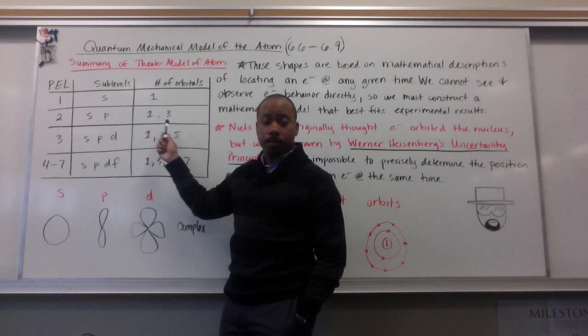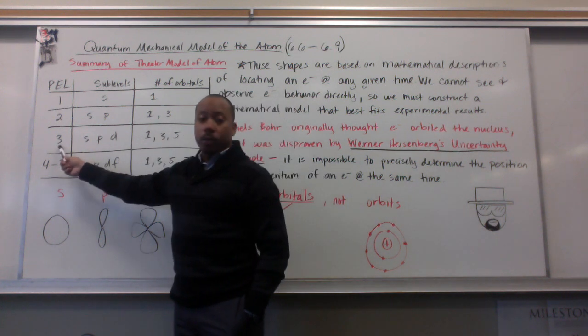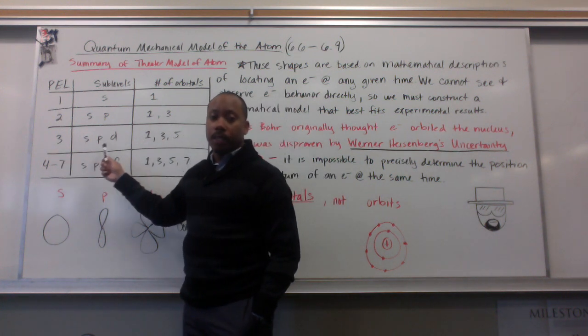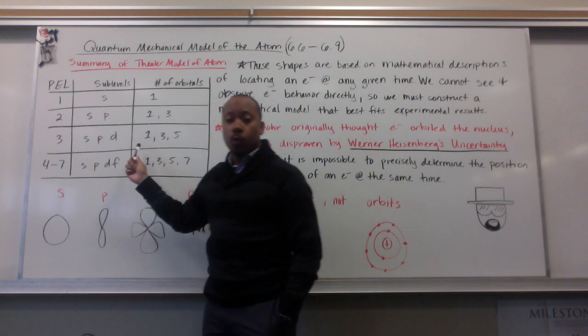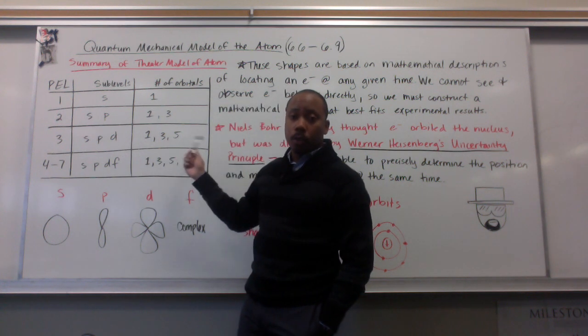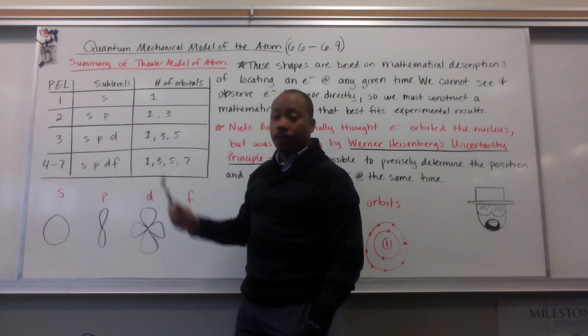In energy level three, we have three sub-levels, S, P, and D. S has one orbital, P has three orbitals, D has five orbitals.